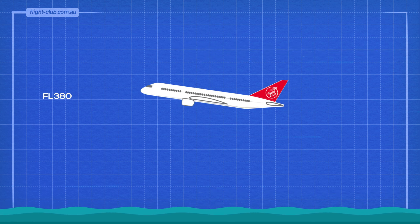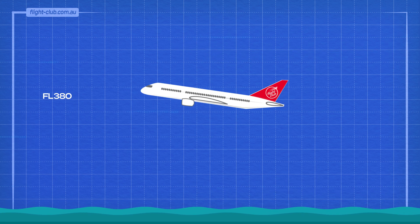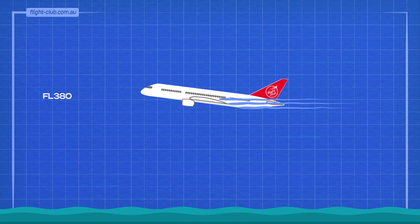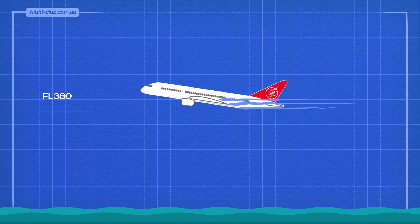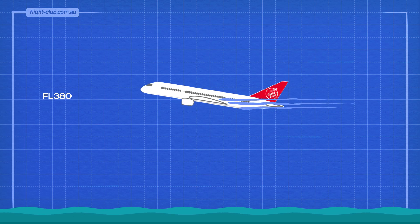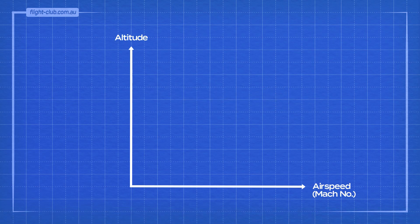Low-speed buffet occurs when the aeroplane approaches a stall, which causes flow separation and buffet of the elevator. At high altitude this occurs at a higher Mach number and lower angle of attack. The Mach number for the low-speed buffet is abbreviated to MMIN and is represented graphically like this.